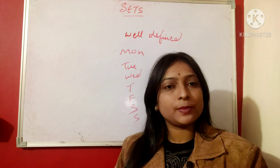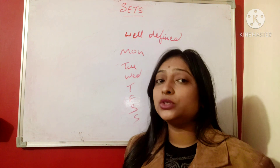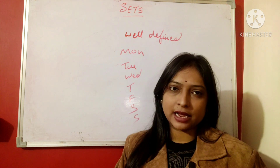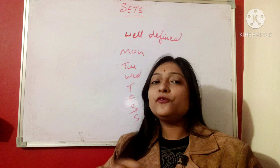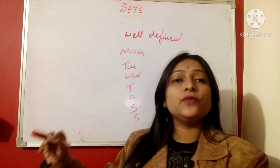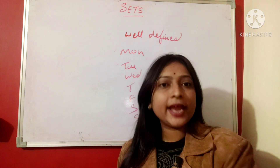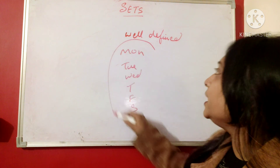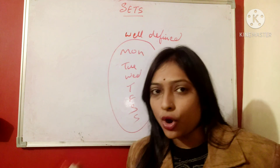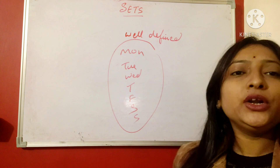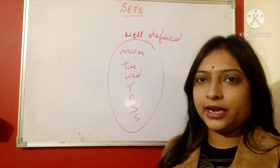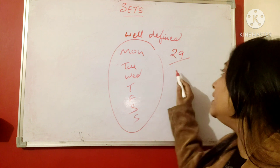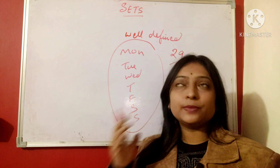Now if I say 'find the tall trees in your area,' tall is a relative term — it differs from person to person. Similarly, a collection of good students in a class: good can mean different things to different people. So these are not well-defined. Well-defined means distinct objects. For example, the states in India — we all know there are 29 states and we can name all of them — that is well-defined, that is a set.